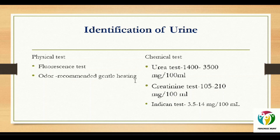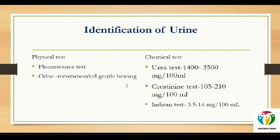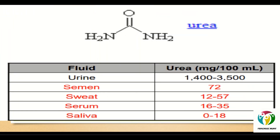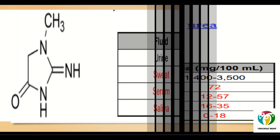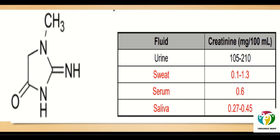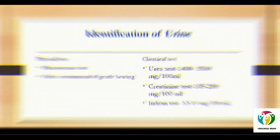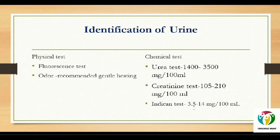Historically, identification of urine relied on identifying inorganic ions or organic compounds present in urine. Nowadays, urine detection relies on the identification of two organic compounds — urea and creatinine — and one inorganic compound, indican. Urea is present at a high level of approximately 1400 to 3500 mg per 100 ml in urine. Creatinine is present at about one-tenth of that value, with an average concentration of 105 to 210 mg per 100 ml. Indican is present at a concentration of 3.5 to 14 mg per 100 ml.